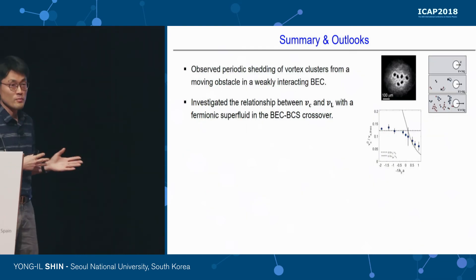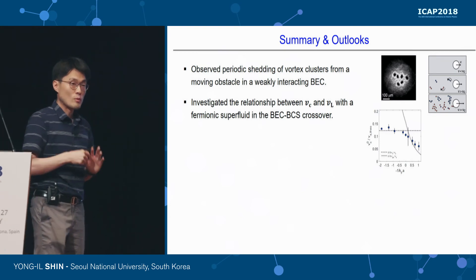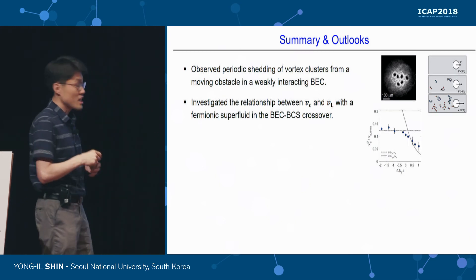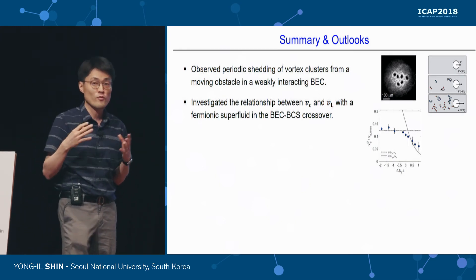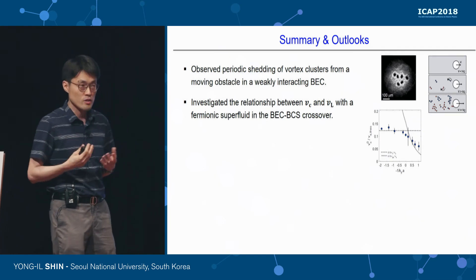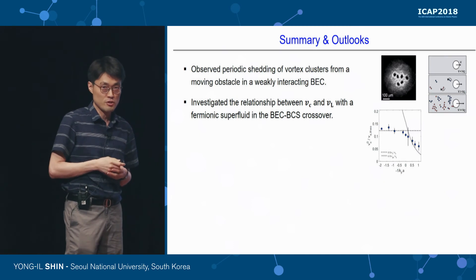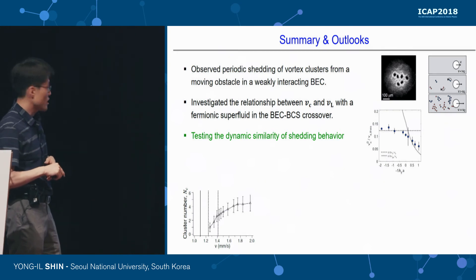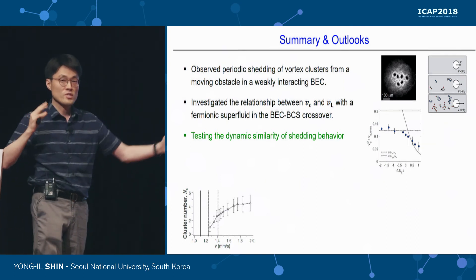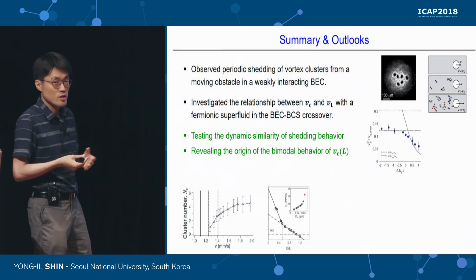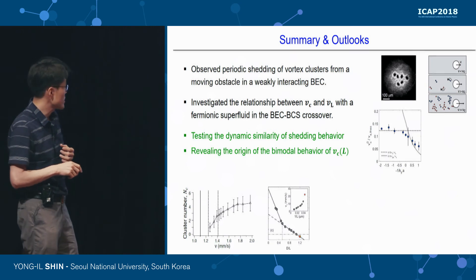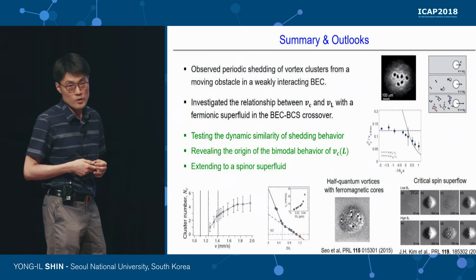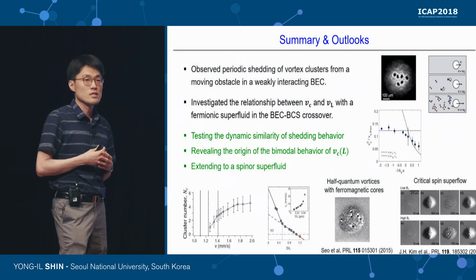In summary: in the first experiment, we observed vortex cluster shedding very analogous to classical fluid behaviors. In the second experiment, we studied vortex dynamics across the BEC-BCS crossover and obtained experimental evidence supporting the local Landau criterion description. In future experiments, we want to test the universality and dynamic similarity of shedding behavior by changing obstacle diameter and sweep distance, understand more about the bimodal behavior of V_C versus L, and extend the work to the spinor superfluid system where mass and spin superflow coexist.